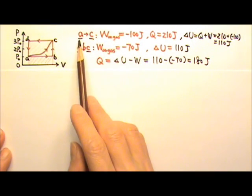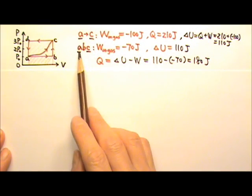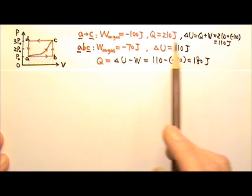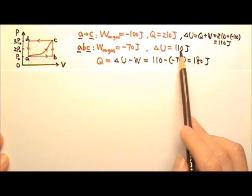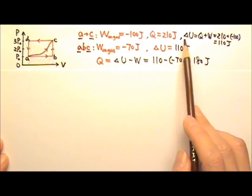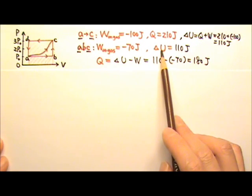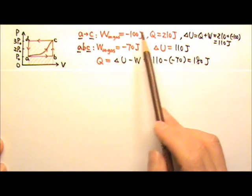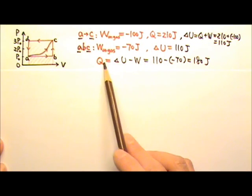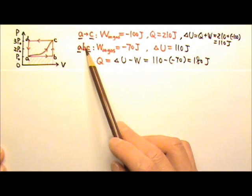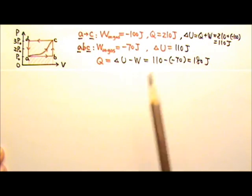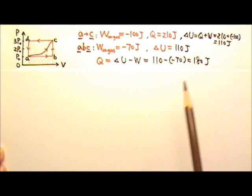As you can see, both of these paths go from A to C, so they have the same delta U because delta U does not depend on the path it takes. But W and Q do depend on the path taken. So two different paths give two different Ws and two different Qs.